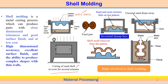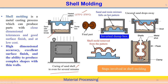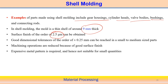One characteristic of shell molding is very high dimensional accuracy and very good surface finish. It is also possible to produce very complex structures. Applications include gear housings, cylinder heads, valve bodies, bushings, and connecting rods. The mold cell thickness is approximately 9 mm, and surface finish can range up to 2.5 micrometers.